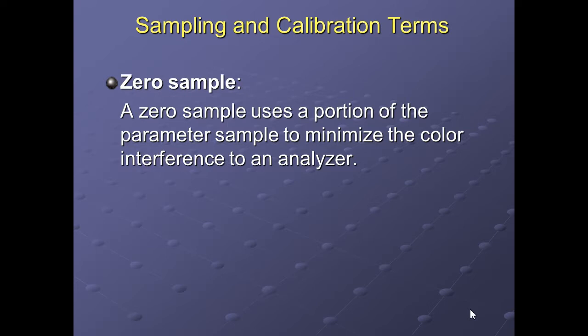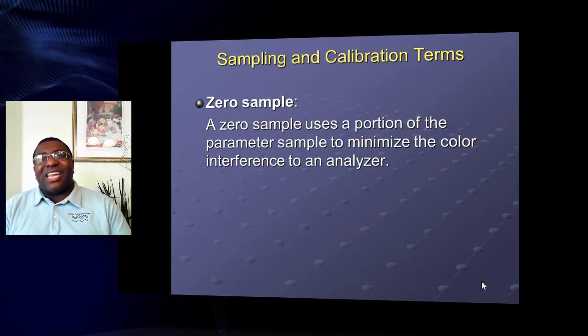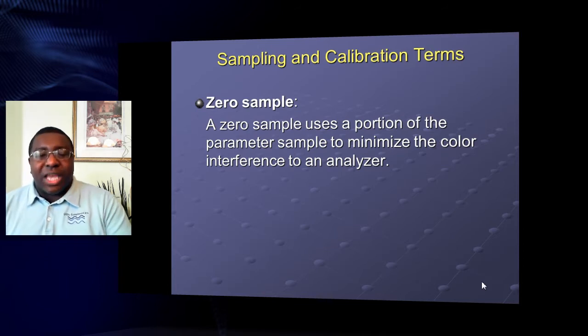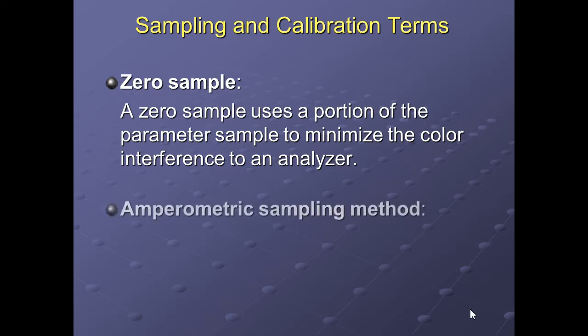The zero sample is different from the blank — the zero sample is a portion of the actual sample. You put it into a vial and tell the machine this is the natural color or natural state of this water before you add any indicating solution, buffer, or reagent. First you have your blank sample to give a baseline, then the zero sample adjusts for the natural field water quality — that color, that TSS of the sample.